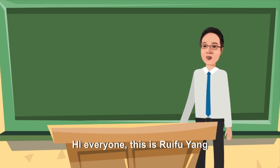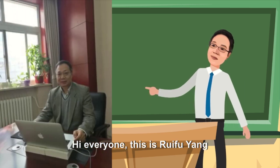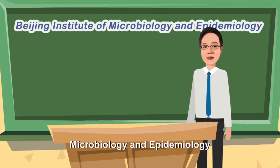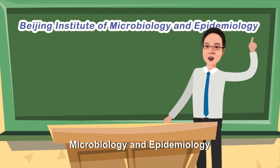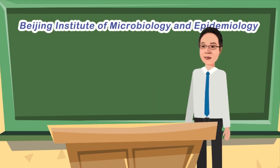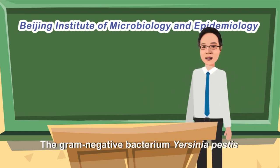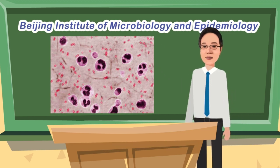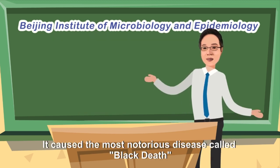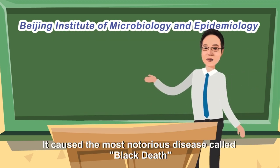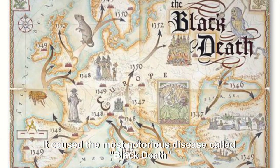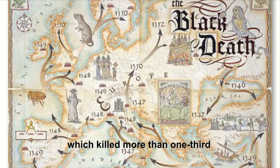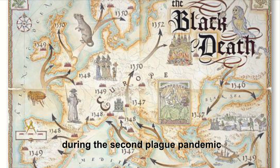Hi everyone, this is Rifu Yang from Beijing Institute of Microbiology and Epidemiology. The Gram-negative bacterium Yersinia pestis is a pathogen of plague. It caused the most notorious disease called Black Death, which killed more than one-third of the population of Europe during the second plague pandemic.